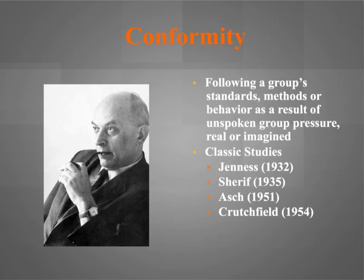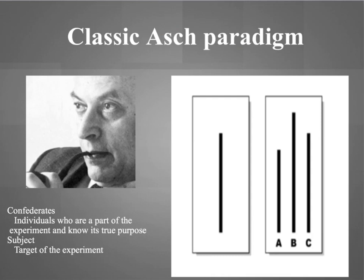We start our investigation with Solomon Asch's 1951 line experiment. To study conformity, Asch devised a simple test. As a participant, you arrive and take a seat at a table where five others are already seated. The experimenter asks which of three comparison lines is identical to a standard line. You clearly see the answer is line C. After two easy trials, on the third trial the first person gives what seems like the wrong answer — line B — and the second, third, and fourth follow with the same wrong answer.